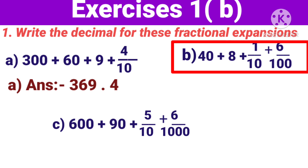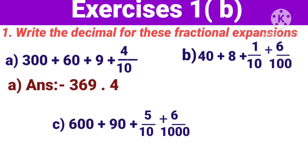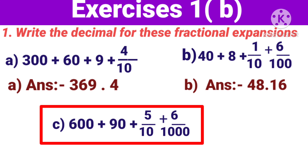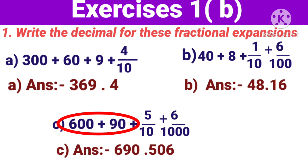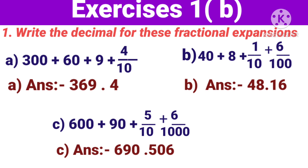Now next b) — forty plus eight plus one by ten plus six by hundred. Yahaan dekhiye — forty plus eight jo hai, ye whole part mein aayega, toh isse hum likhenge forty eight. Point one six — toh jab point ke baad wale numbers ko likhenge: one six. So, 48.16. Now next one — six hundred plus ninety plus five by ten plus six by thousand. Six hundred plus ninety hoga — 690. Point five by ten plus six by thousand. Yahaan yhe sequence mein nahi hai kyunki hundred wala place yahaan par nahi hai. Toh us place pe hum likhenge zero. So, six hundred and ninety point five zero six — 690.506.